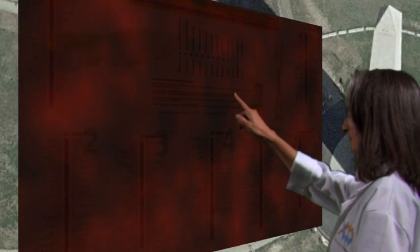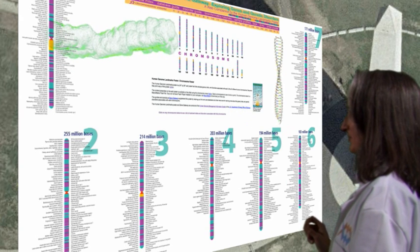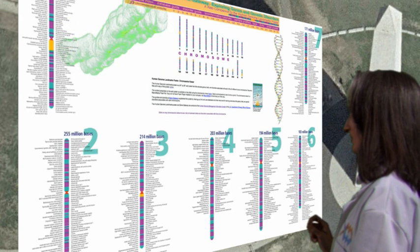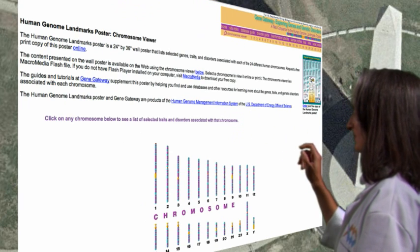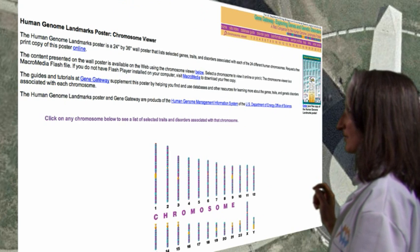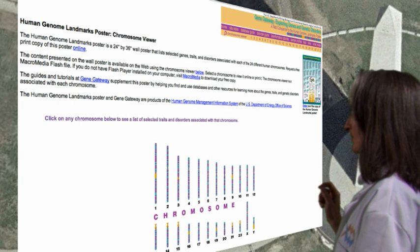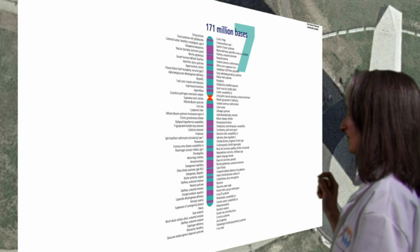The U.S. government maintains a website with much of the current information about genes, chromosomes, and proteins. In the section labeled Chromosome Viewer, you can select a chromosome and see how many base pairs or letters are on the chromosome. When you get to the webpage for each particular chromosome, you can see a list of traits and disorders associated with genes on that chromosome.